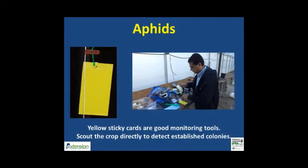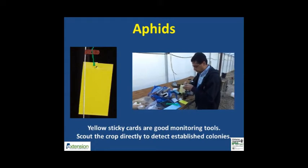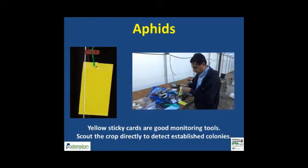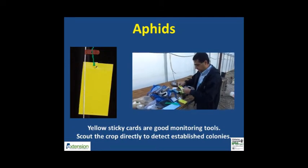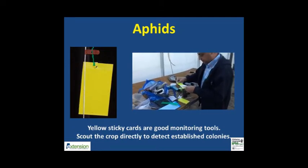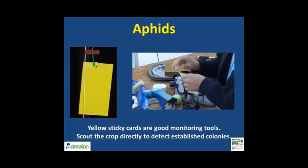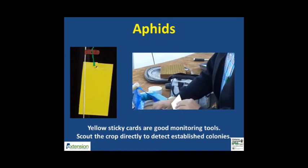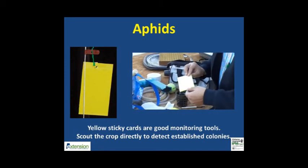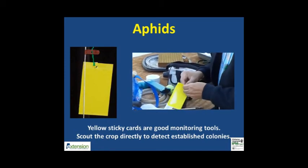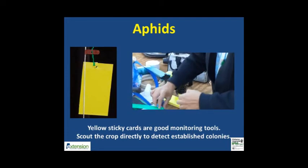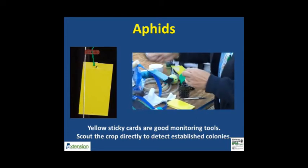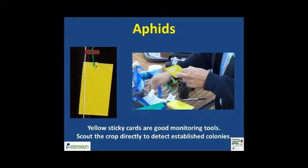Sticky traps are a relatively inexpensive monitoring tool and should be accompanied by actual crop scouting to detect insects. Sticky traps should be installed a foot or more above the crop canopy to capture flying insects like aphids, thrips, and flies. Monitor aphids using yellow sticky traps at a minimum of one trap per 1,000 square feet. Having more traps in the greenhouse will not hurt.